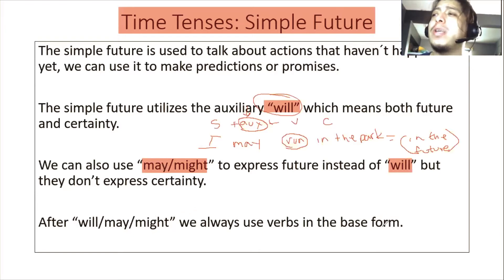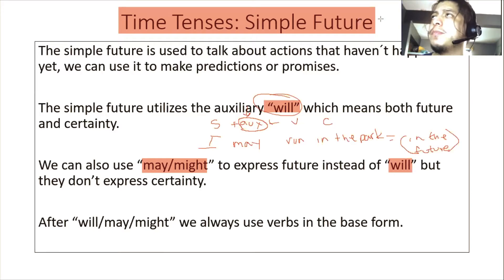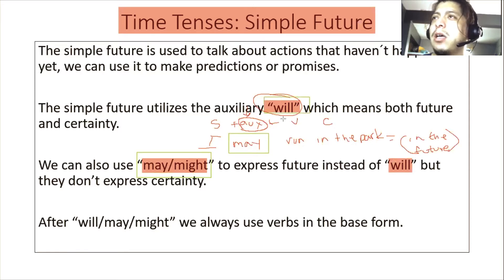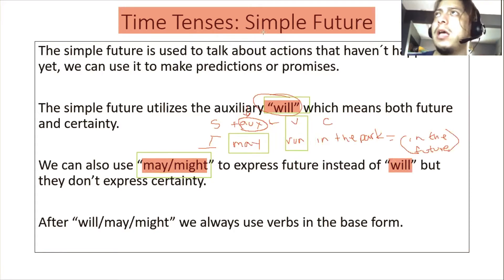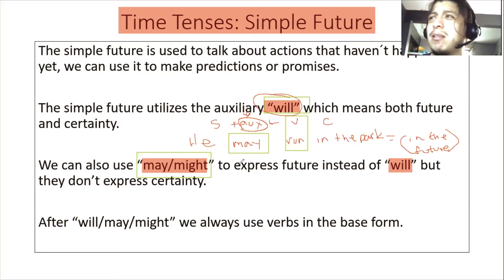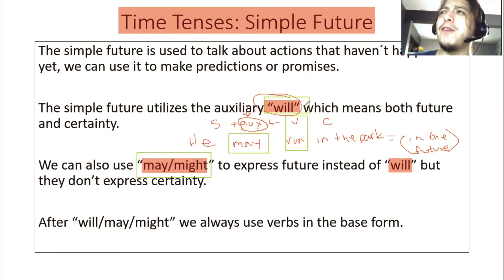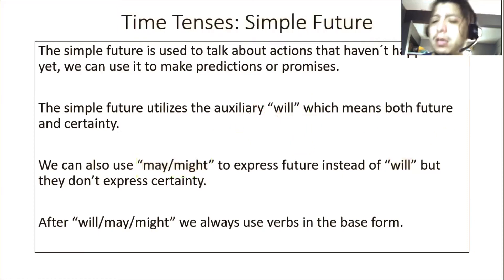After 'will,' 'may,' or 'might,' we always use verbs in the base form. This is probably the most important part. When we use 'may,' 'might,' or 'will' — any of these three — our verb is always, always, always in the base form. That means no matter what the subject is, you don't conjugate it. It doesn't matter if the subject is 'I,' 'he,' 'she,' or 'you': 'he may run,' 'she may run,' 'you may run,' 'he will run,' 'we will run' — you don't have to change anything. We're going to focus on 'will' since it's the most common one.